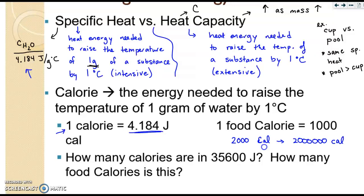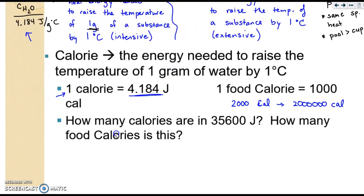Now, you should be able to use these or recognize these as conversion factors, which means we should be able to answer the question below using dimensional analysis. So the question asks, how many calories are in 35,600 joules? And then it asks, how many food calories is this? Please pause the video and using proper dimensional analysis, answer these questions.